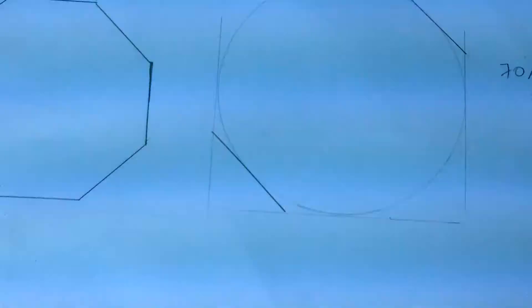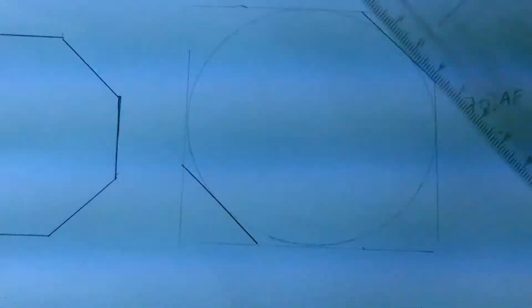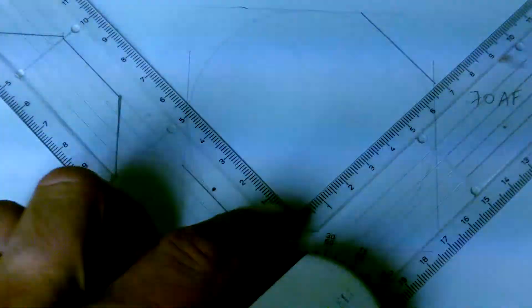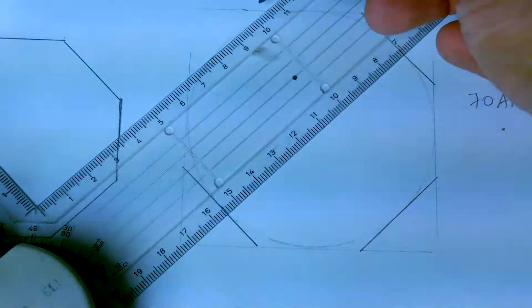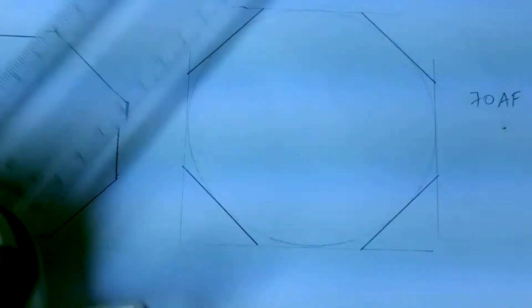I'm going to do the same thing with the other angle. All you need to do now is darken it. That's your octagon.